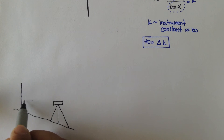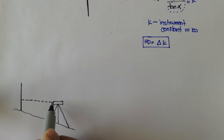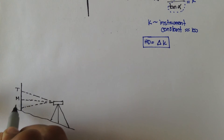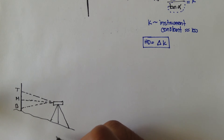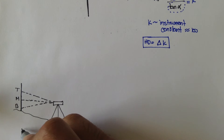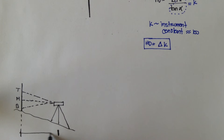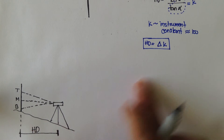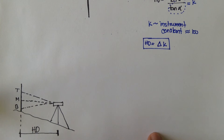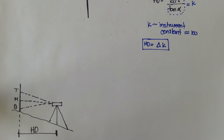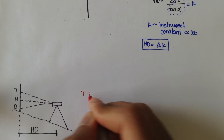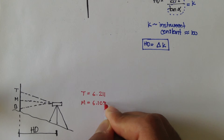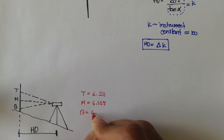You sight out to the middle, you sight out the top, and you sight out the bottom — top, middle, bottom. The distance from here to there is your horizontal distance. We can figure out the horizontal distance using HD equals delta times k. Let's say your top was equal to 6.211, middle was 6.105, and bottom was 6.000.